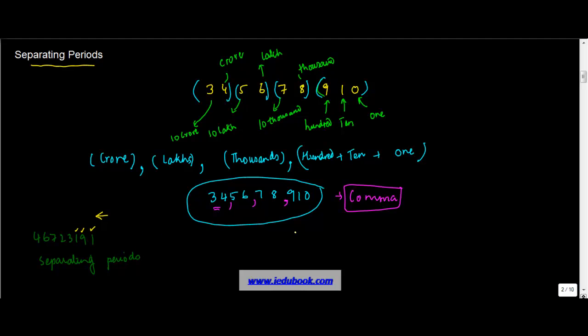You write this as 1, 9, 1 and add a comma. Similarly, 3 and 2 represent one thousand and ten thousands respectively, so 2, 3 is another period. You write 23 here and put in a comma.